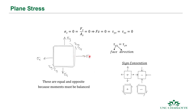On this face we have sigma x — we define this as the x-face. On this face here we have sigma y. The sign convention is that if the stresses are pointed outward, which puts it in tension, we have a positive state of stress. If they're pointing inward, the stress is negative and we have a compressive state of stress. For shear it's not as obvious, but the sign convention is if we're going along the positive x-axis and along the positive y-axis, that is a positive state of shear. Tau xy represents the shear stress on the x-face in the y direction, and they're equal and opposite in magnitude.